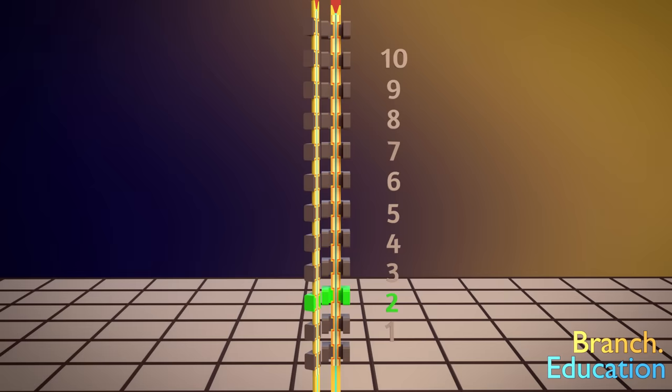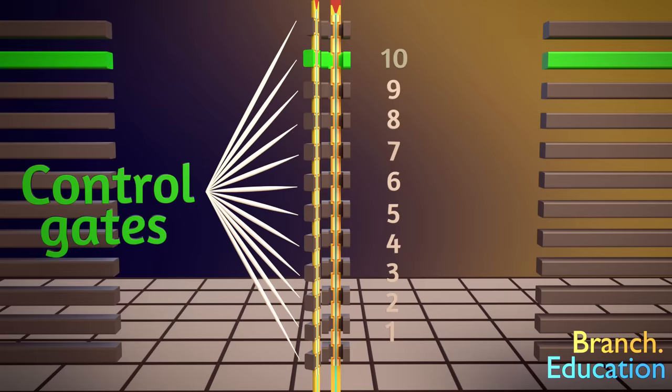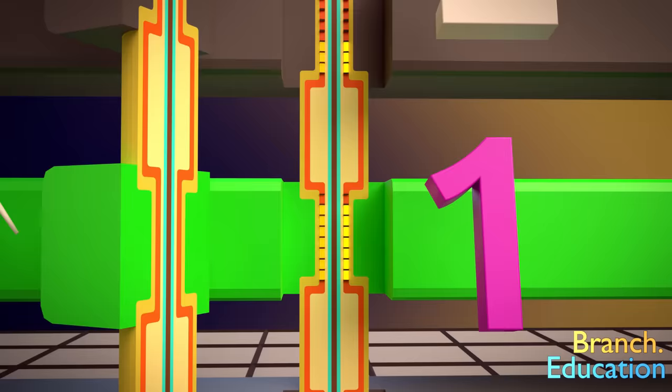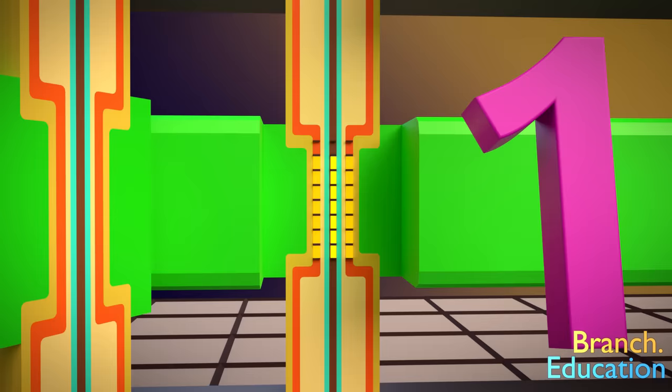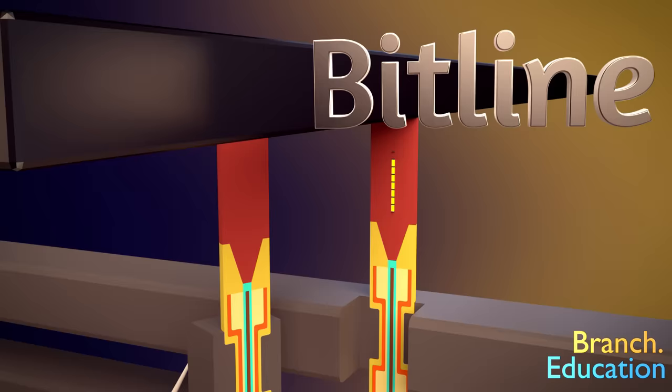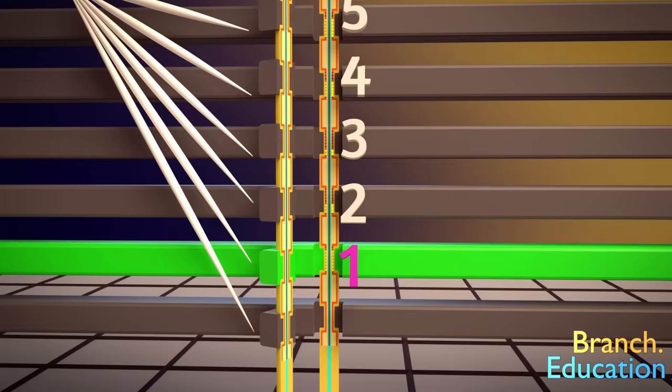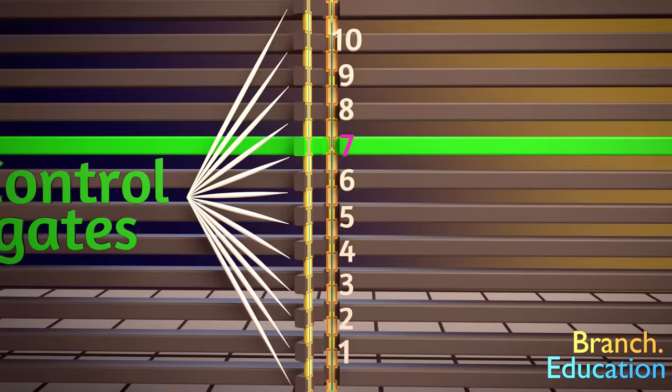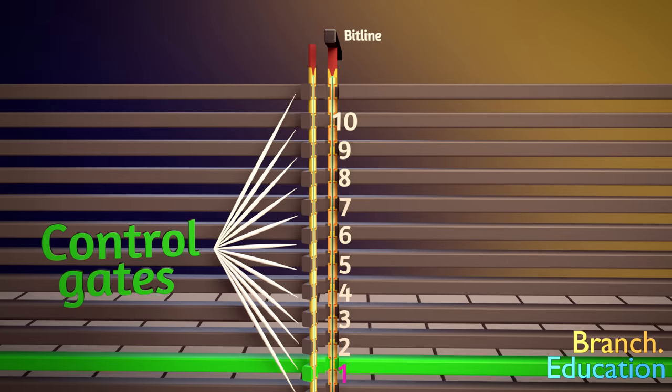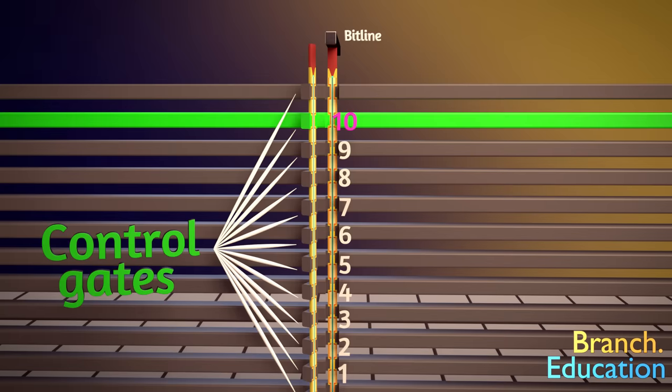When information is written to or read from a string, only one cell can be activated at any given time. And to do that, we use separate control gates attached to every layer in the string. It works like this. The bottom control gate first says, Hey you, charge-trap one, what's your electron charge level at? Then the bottom cell sends that information through the center of the string up to the information highway at the top, which is technically called a bit line. Then the next control gate for the second layer asks for the charge level in the second cell, and so on up the string, each cell sending their information up to the highway or bit line.